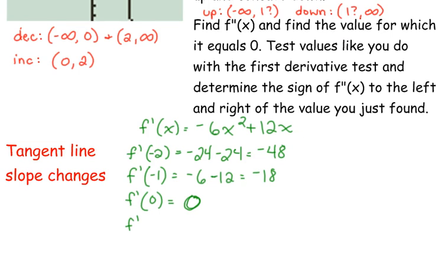F prime of, I want to use 1 half right here. 1 half squared is 1 fourth, so that's negative 6 over 4, plus 1 half of 12 is 6, but I want to express it as over 4 so I can combine those. That's 18 over 4, which is like 4.5. So now we have a positive slope.